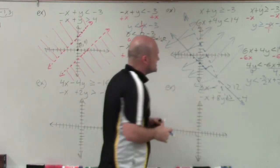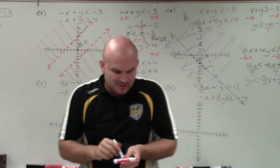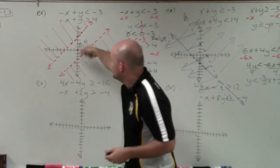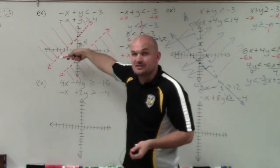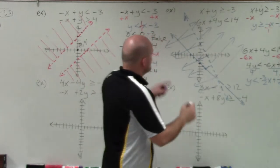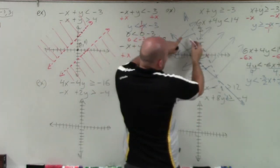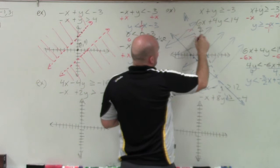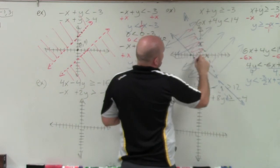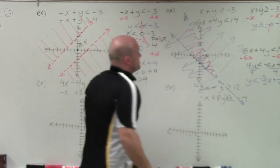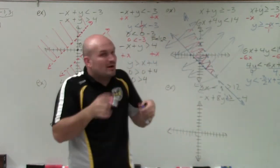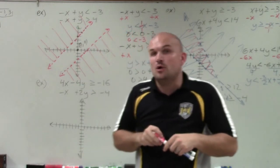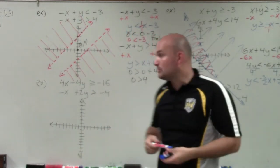When graphing a system of inequalities, the main thing we're concerned about is the intersection of the feasible solution. This example has an intersection between the two lines — unlike the first example which had no solution. Where the two inequality solutions intersect is our feasible region.